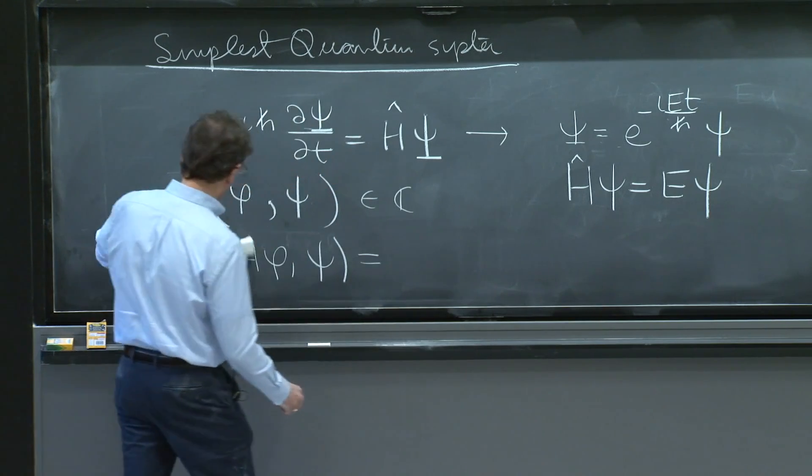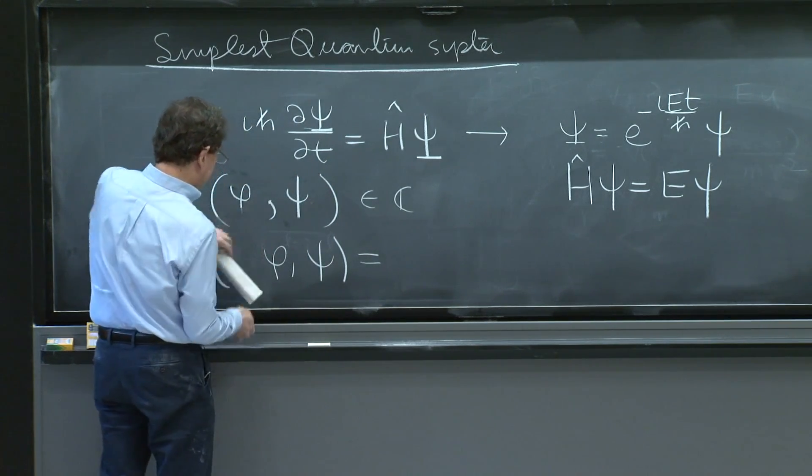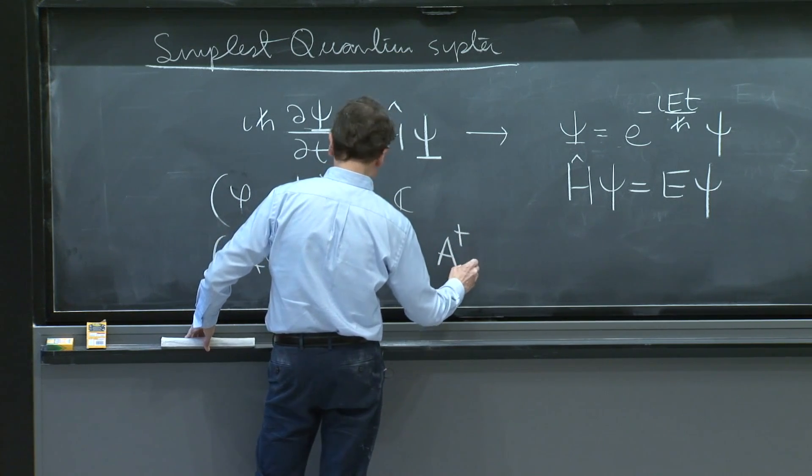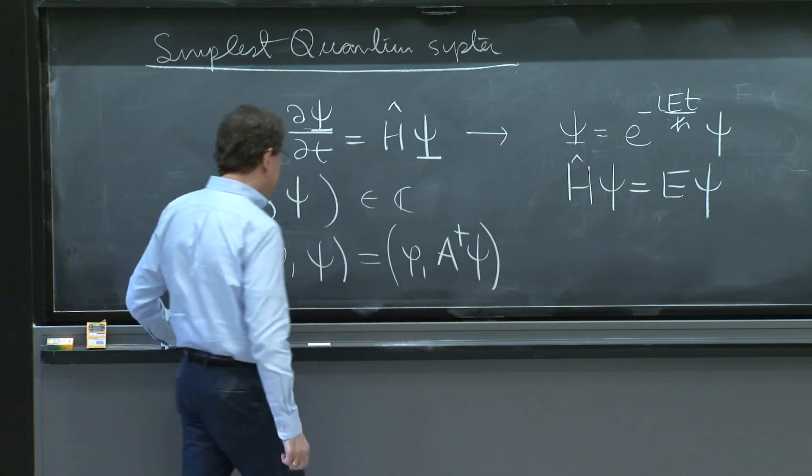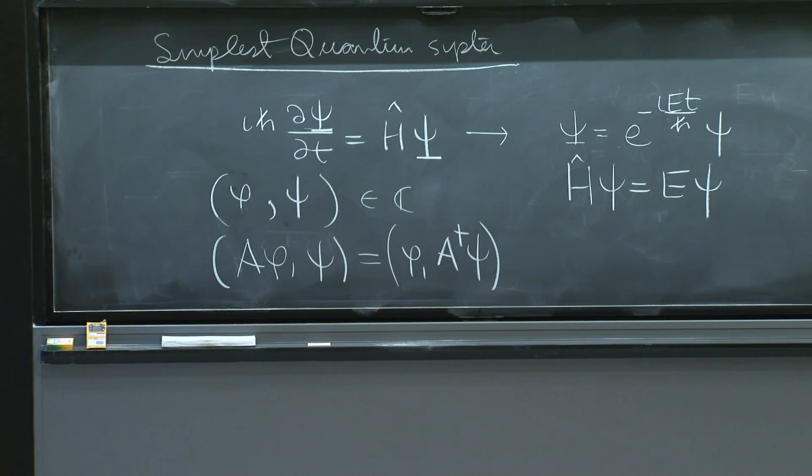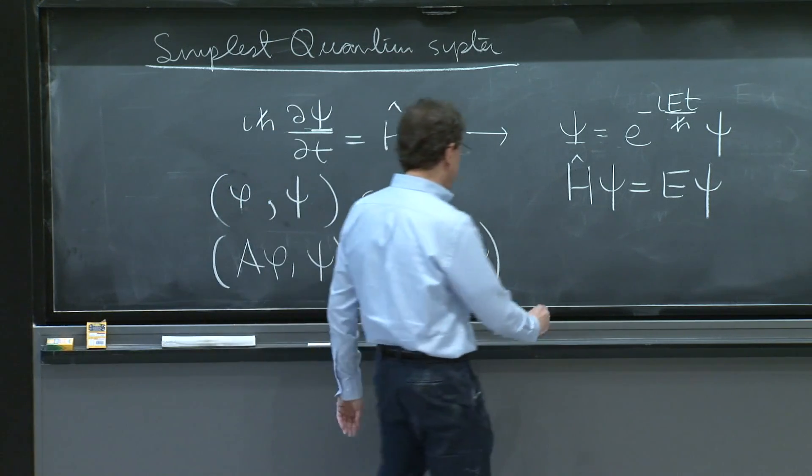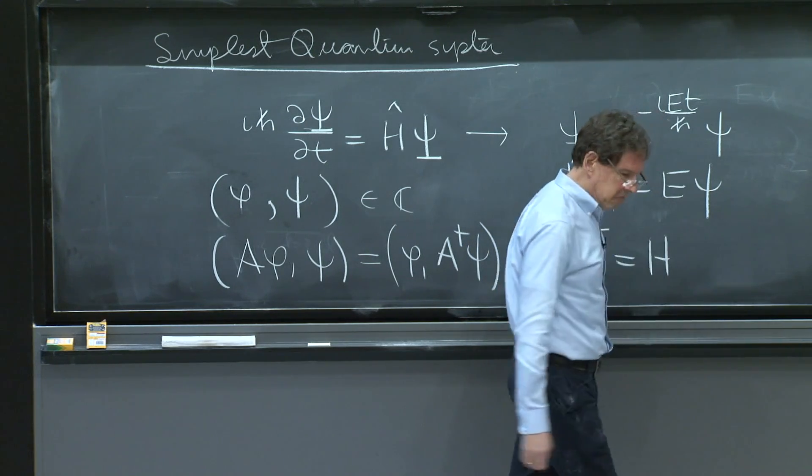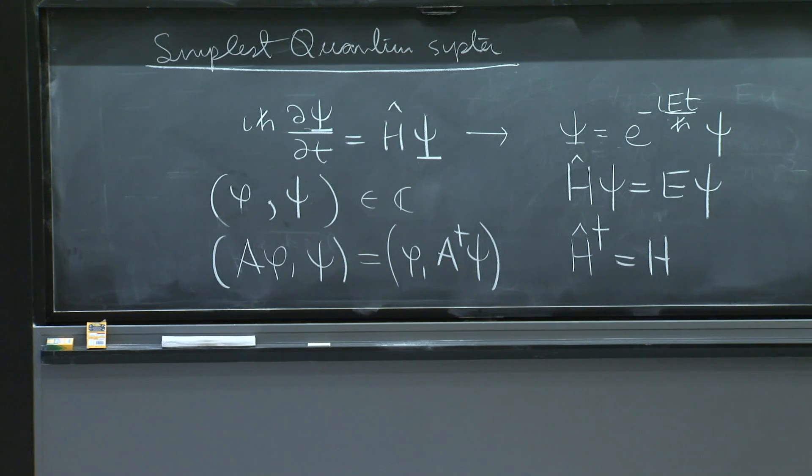For any operator A, this is equal to ⟨φ|A†ψ⟩. That's the Hermitian conjugate, a general definition. And we want H to be Hermitian, so H† = H. So in some sense, you could say that's quantum mechanics for you. It's a Schrödinger equation, a Hamiltonian, an inner product, a notion of Hermitian operators. And then you're supposed to solve it.